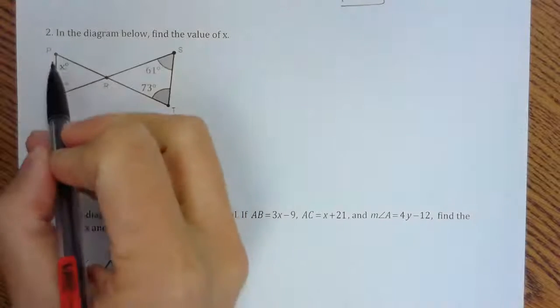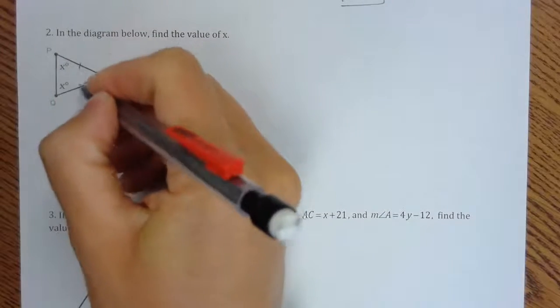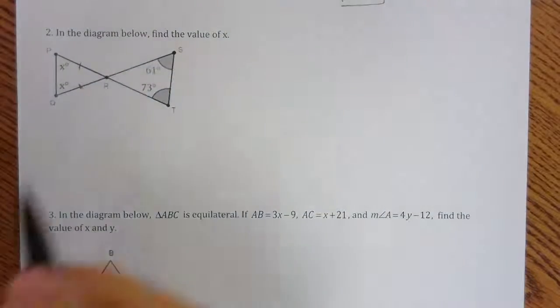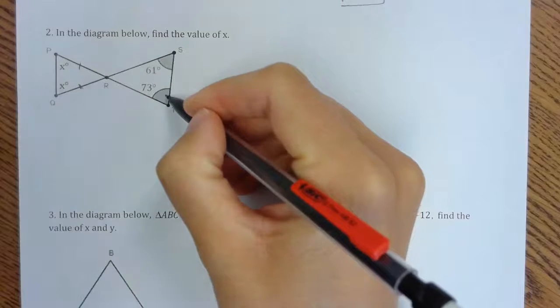So we know these two angles are the same. These two sides would be the same. We have angles 61 and 73 here.